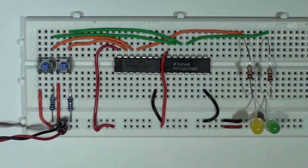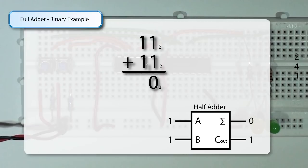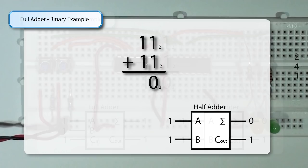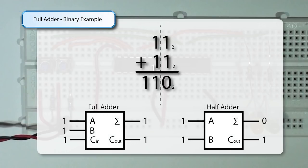The same holds for our binary calculations. We are going to add 11 base 2 to 11 base 2 — essentially adding 3 plus 3 in decimal. We go to the rightmost column and add 1 plus 1. Because there is no carry in at this point, we can use a half adder: A=1, B=1 gives sum 0 and carry 1. This carry goes to the next stage, so now we have three inputs: 1 plus 1 plus 1. A, B, and carry in are the inputs to our full adder, giving a sum of 1 and a carry out of 1.